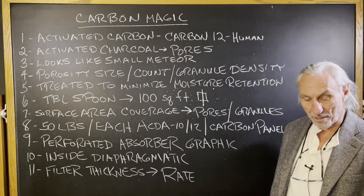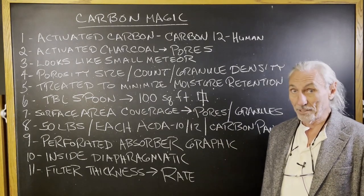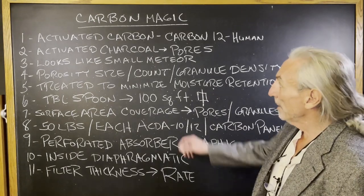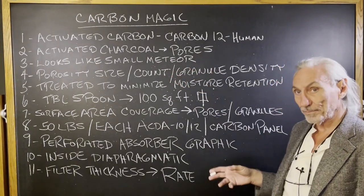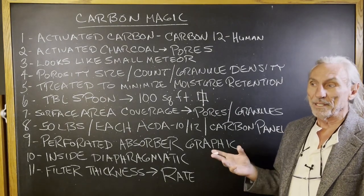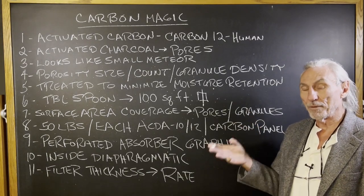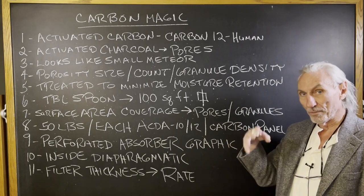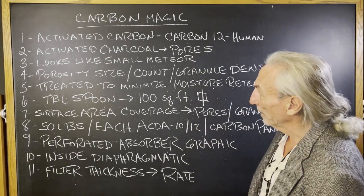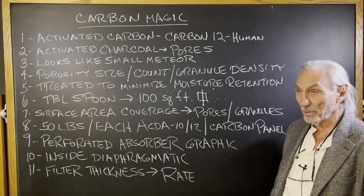Activated carbon base is carbon 12 — that's what we're made of as human beings. It's the basis for our DNA and building blocks and all of that. We want to think about activated charcoal as charcoal — that's the easiest way to explain it because it looks a lot like charcoal, only it's in granular form. If you look at the structure of it, it's the carbon with pores — that's the activated part. Those are the holes in it. It looks like a small meteor when you hold it up; you can see light through all the pores.